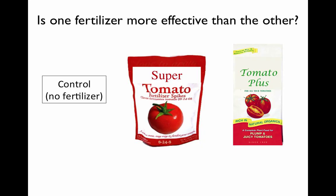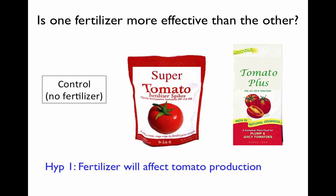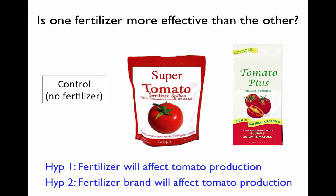Just as before, we would randomly assign these treatments to tomato plants, apply fertilizer where appropriate, and keep track of how many tomatoes are produced in each treatment. With this design, we can actually address two different hypotheses: first, we can test whether fertilizer in general affects tomato production by comparing both fertilizer treatments to the control; and second, we can test whether different brands of fertilizer have different effects on tomato production.